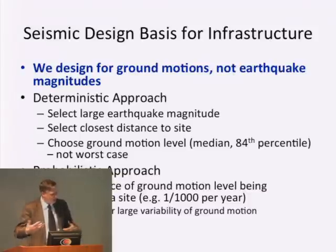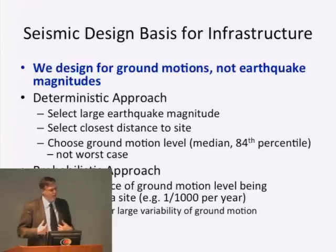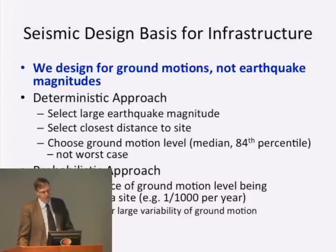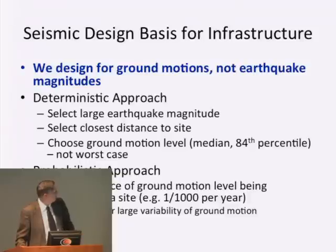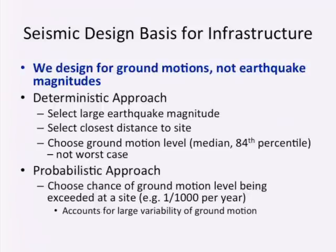That sounds a little circular because we consider the magnitude in coming up with the ground motion, but that's important to understand. So when we say, what if we have a magnitude nine here, that's not my concern. My concern is what if we have very strong ground shaking, or with tsunamis, a very high tsunami height. There are two approaches we use to get at ground motions: a deterministic approach where we pick an earthquake, like a magnitude eight on the San Andreas, pick the closest distance to our site, but then choose a ground motion level that is not the worst case.